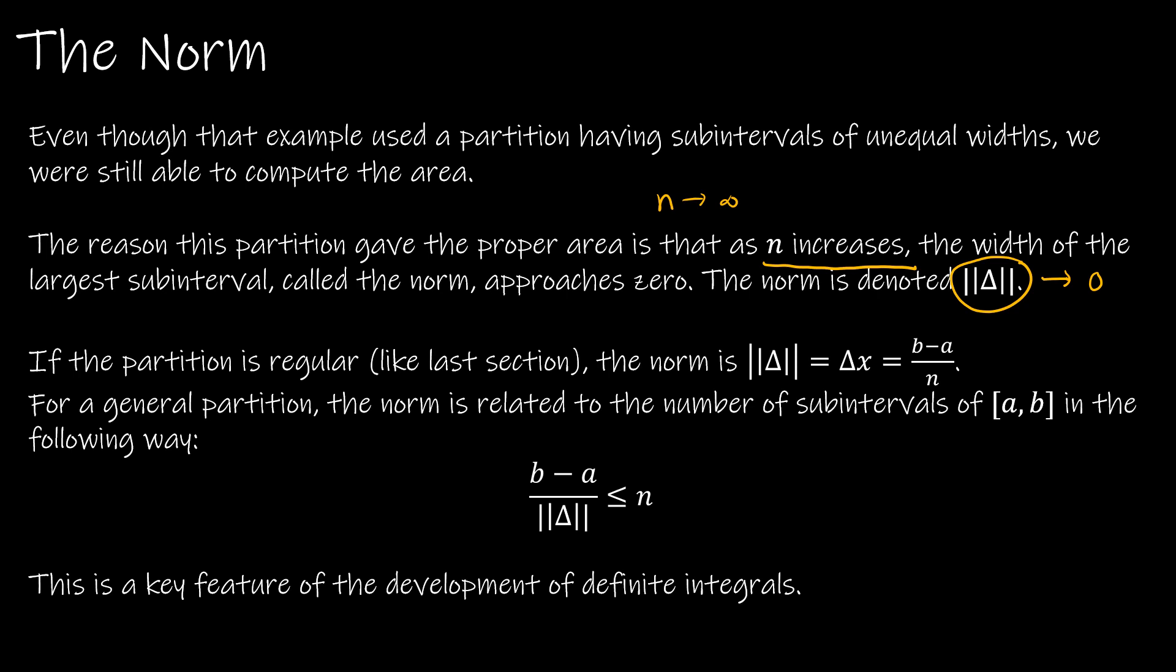So essentially, we're saying those intervals are getting smaller and smaller and smaller, like in our last example. And as long as that is the case, it doesn't matter if delta x is determined by equal subintervals of b minus a over n, or intervals where as n increases, the norm is decreasing. Either way, we're going to be able to use what is called the Riemann sum.